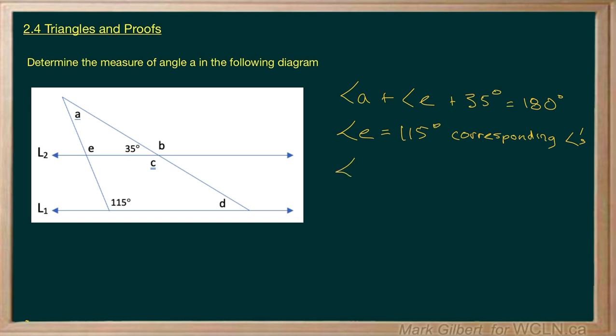So now we have angle A plus 115 plus 35 equals 180.